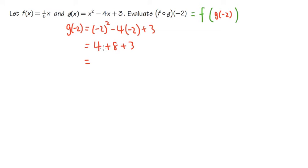So you see, 4 plus 8 is 12. 12 plus 3 is 15. Therefore, what we are going to do is, this is going to be f of, and the inside, g of negative 2, which we know is going to be 15. So that's what we have.